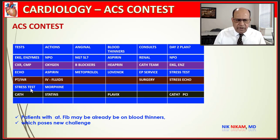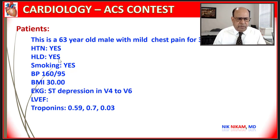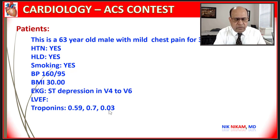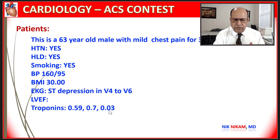A 63-year-old male with chest pain for three days, hypertension, hyperlipidemia, smoking, high blood pressure, ST depression in V4 to V6, and elevated troponin levels. Would you do a regular treadmill test? No — elevated troponins. Would you do a stress echocardiography? No — for the same reason and because the patient is obese and unable to exercise. We already know the EKG is abnormal and troponins are elevated. This patient should be going for cardiac catheterization.